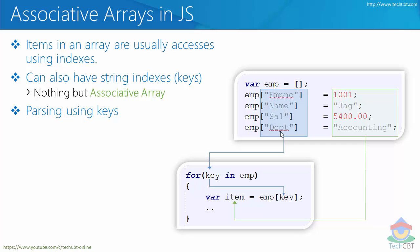In order to parse through all of these keys, there exists the construct 'for...in'. Whenever you say 'for key in emp', it essentially goes through each and every string index. For each iteration, those particular keys are stored inside a variable — it doesn't necessarily have to be called 'key'; you can also use a variable called i, a, p, or whatever. I used 'key' just for clarity.